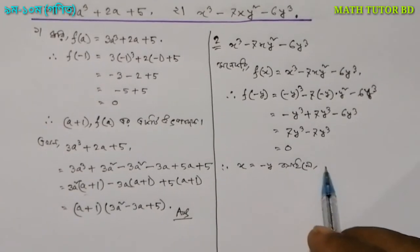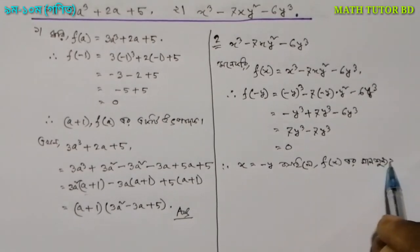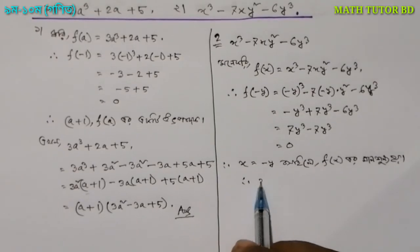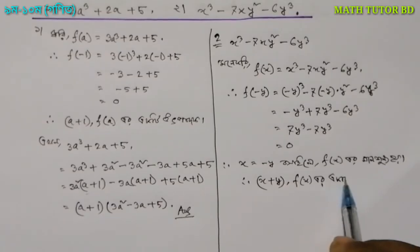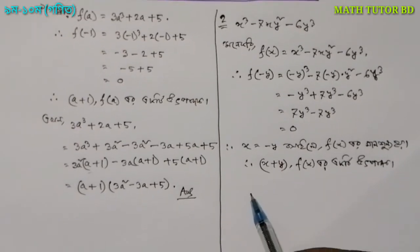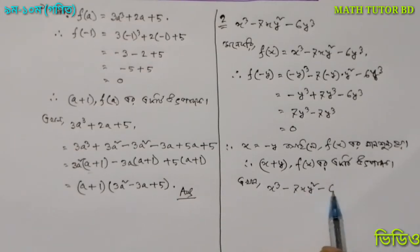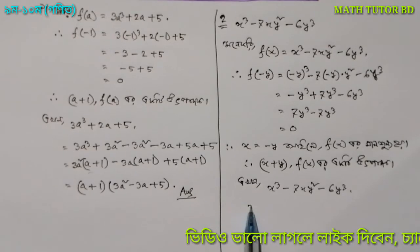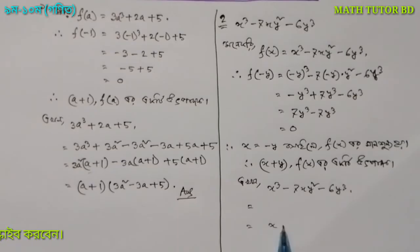Let's look at this. x is equal to minus y. Then x is equal to minus y, and the function of x at that value — (x plus y) is a factor of x. We get: one, one, one — two; three, 2y² minus 6y³. We know that (x plus y) is a factor, so x plus y times x cubed.